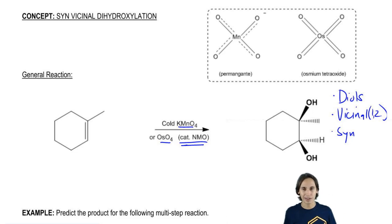So how does this actually work? The reason this works is because potassium permanganate and osmium tetroxide both have a very, very similar structure where it's basically one central atom surrounded with as many oxygens as possible.